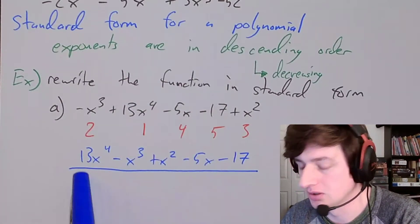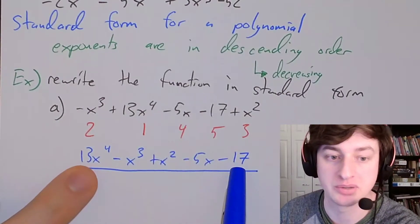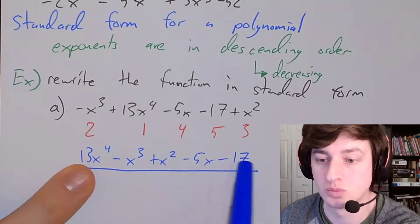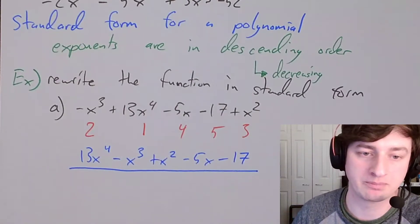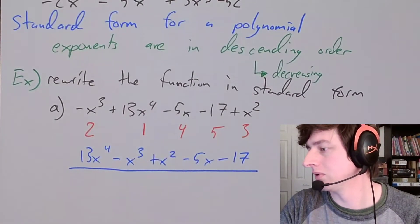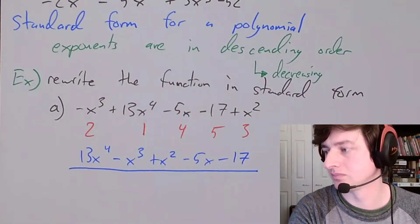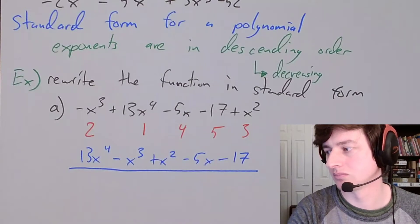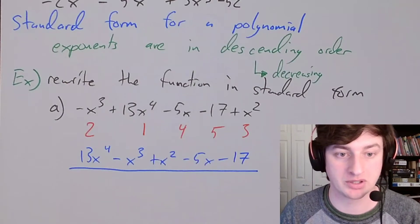That is in standard form. If I plugged both versions into Desmos, it would look exactly the same — one is just in standard form and one is not. This is distinctly easier to read. It's not the coefficients that go biggest to last — the 17 is bigger than 13 but it's still at the end. It's the exponent that matters: 4, 3, 2, 1. And then the constant is really x to the 0, but we don't write that.